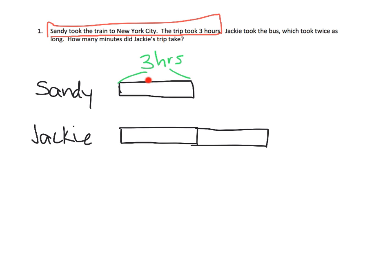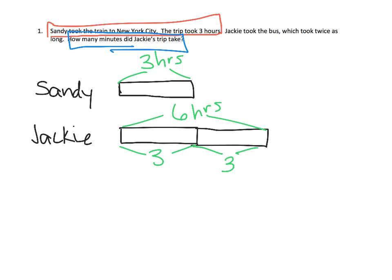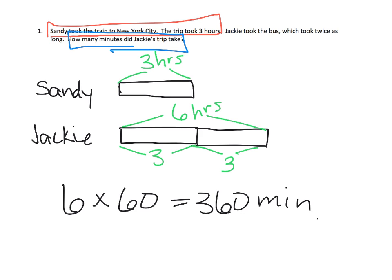If Sandy's block was three hours, that means the first part is three hours and the second part is also three. So Jackie has a total of six hours — Jackie's trip took six hours. But the big question is how many minutes did Jackie's trip take? We need to take that six hours; each hour is 60 minutes, so six times 60 is 360 minutes. Jackie's trip is 360 minutes.